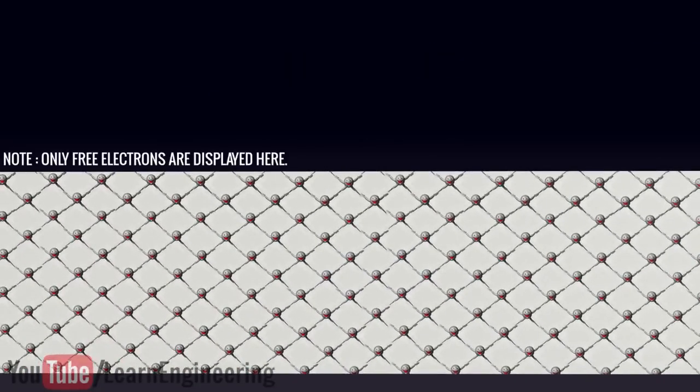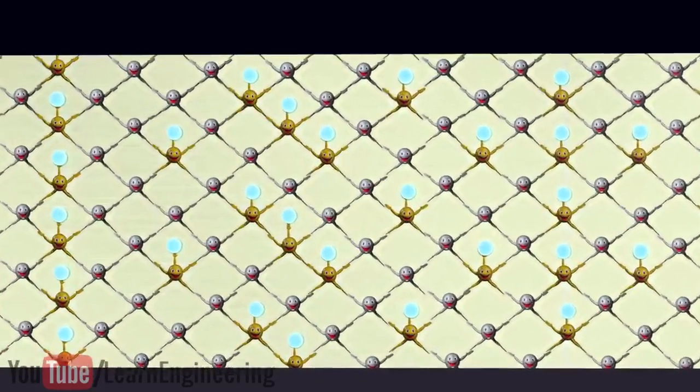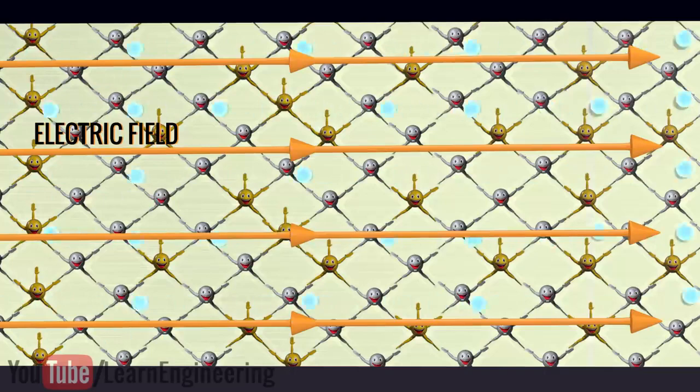Assume that phosphorus atoms with 5 valence electrons are injected into it. Here, one electron is free to move. In this structure, when the electrons get sufficient energy, they will move freely.